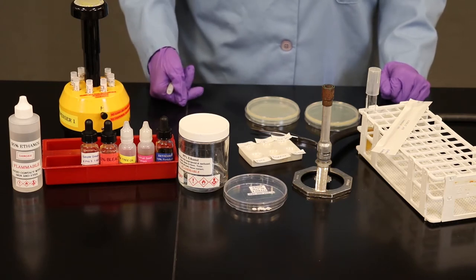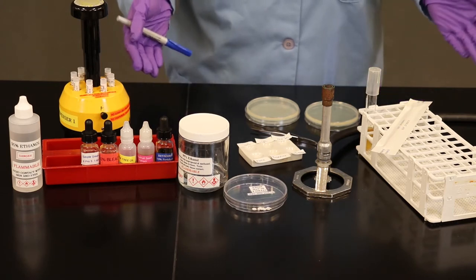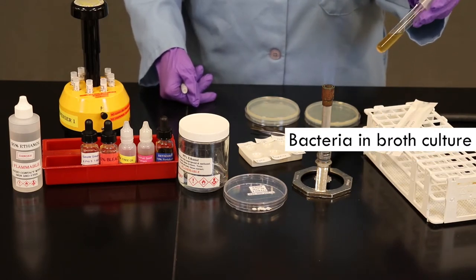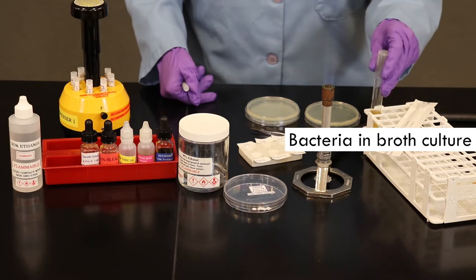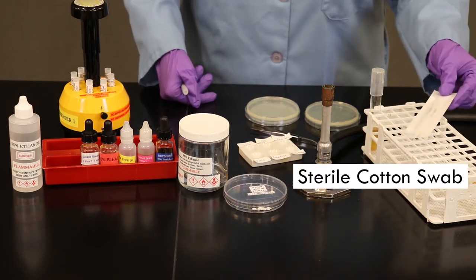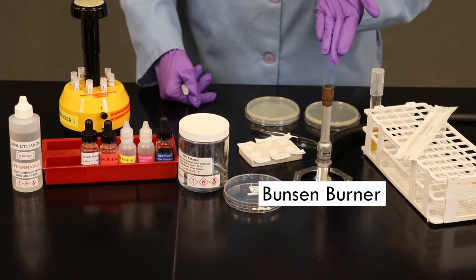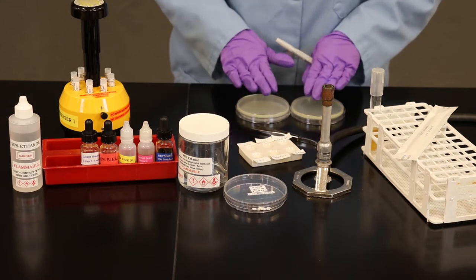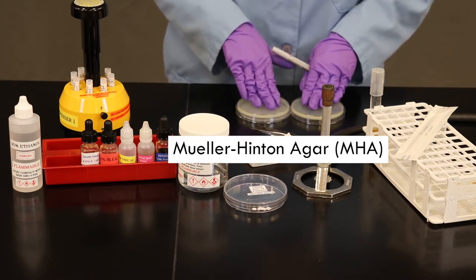For this lab, the following materials are your test tube rack, your bacteria of interest that you want to test in a broth culture, a sterile cotton swab, your ready Bunsen burner. In this case, we're going to be working with two petri plates. These are both what we call Mueller-Hinton Agar.